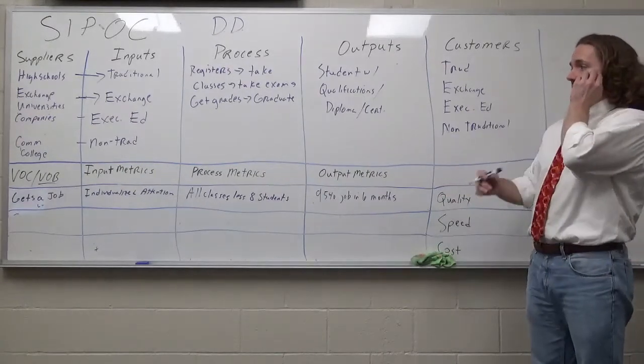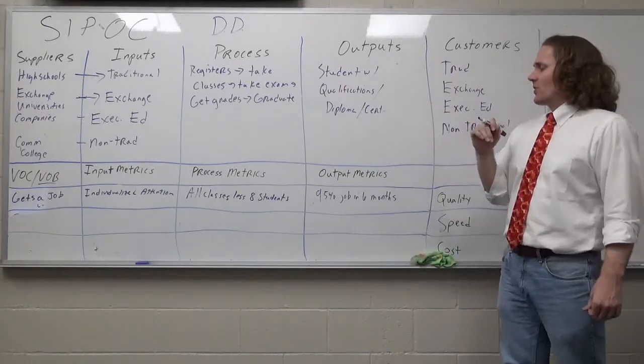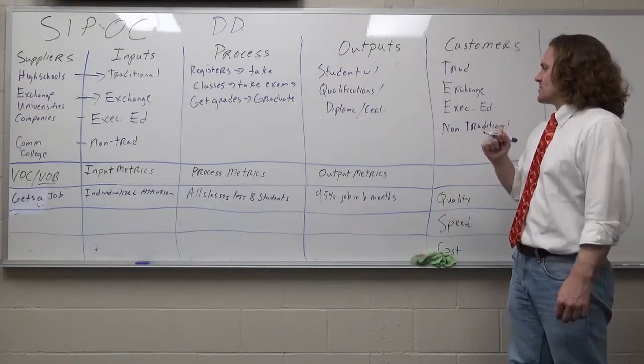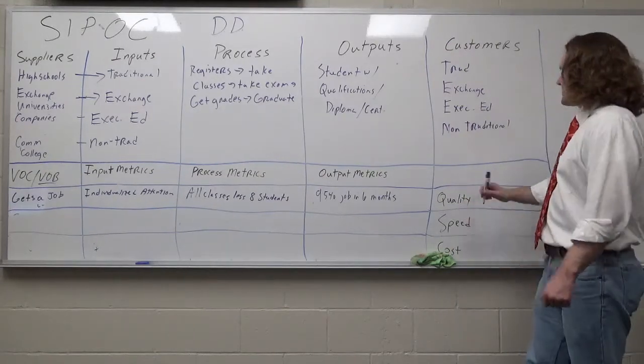Student wants a job, voice of the customer, input metrics. In order to help get them a job, we give them individualized attention. All classes are going to be less than eight students for the process metric. Output metric, 95% get a job within six months. That's quality.